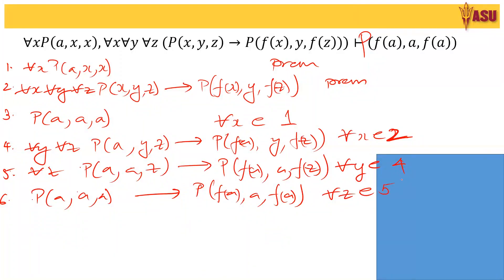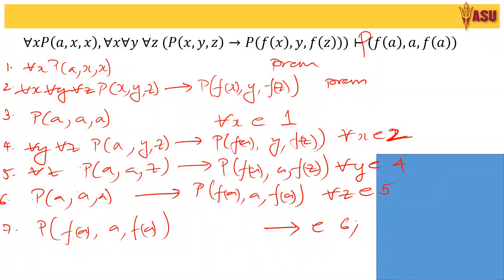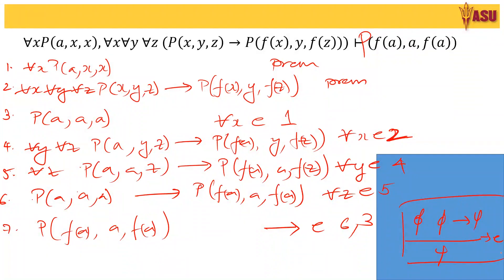Using step 3 and step 6, we get our conclusion: P(f(a), a, f(a)). This is the elimination rule of implication — given φ and φ implies ψ, you can conclude ψ. This is the rule used in step 7.